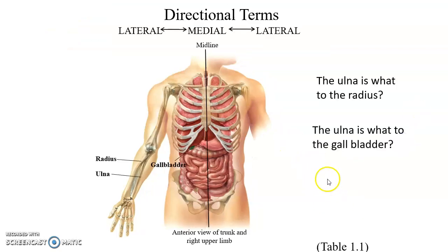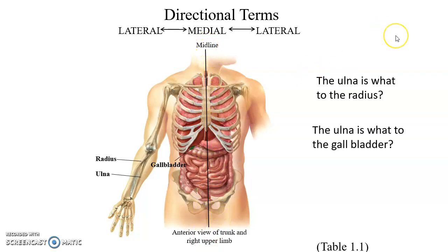Another set of terms is lateral and medial. In this case, we are referring to the midline — that line that if you cut the body in half through that line, you basically get an equal right side and left side. Medial means closer to the midline. Lateral means further away.